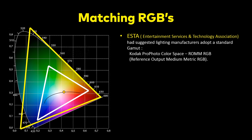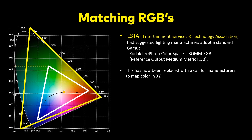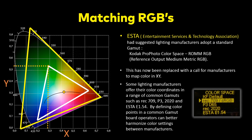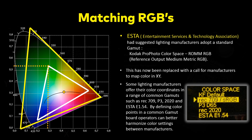ESTA is part of the technology group at the ASC as well, and these are all things that are in flux right now. What it's calling for is that we're going to be moving more and more to mapping in XY, because it's independent of the gamut. But between manufacturers, you still want to define a gamut. In our case, we're offering Rec 709, P3, and Rec 2020, including ESTA.